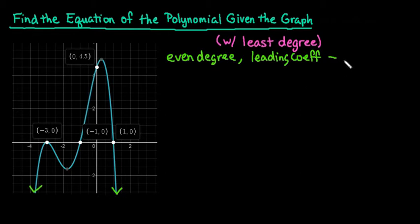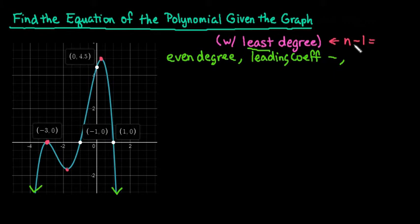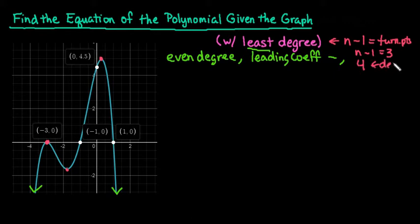We can figure out the least degree by looking at the number of turning points. The graph turns one, two, three times, and the formula n minus 1 always gives you the number of turning points. So since n minus 1 equals 3, that tells us the degree is going to be 4 — the least degree possible, which also backs up the fact that it is even degree.